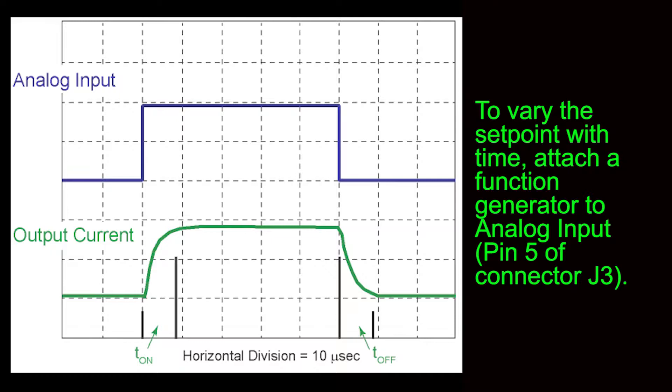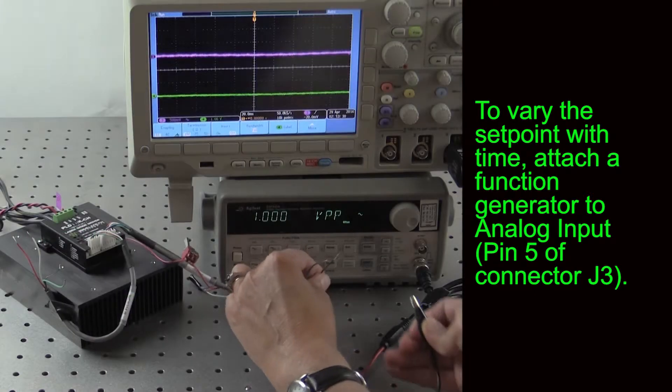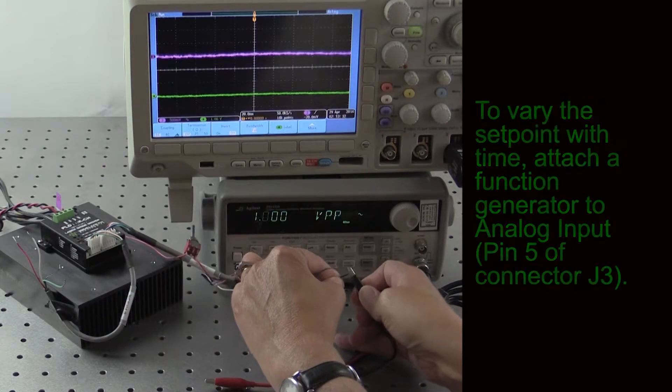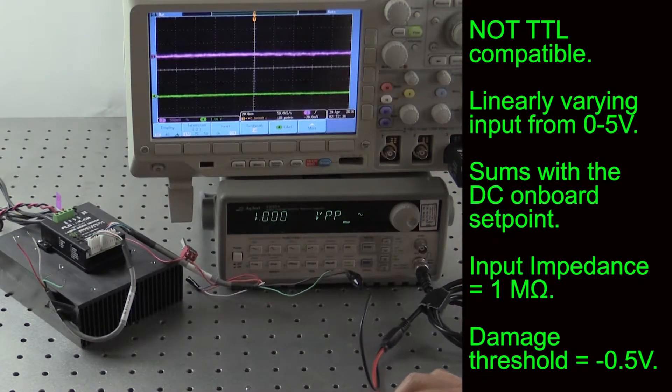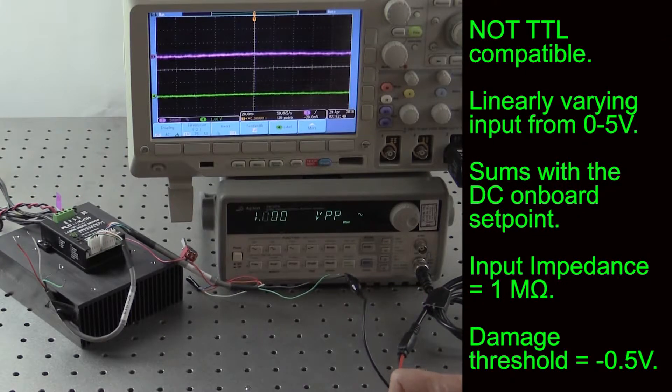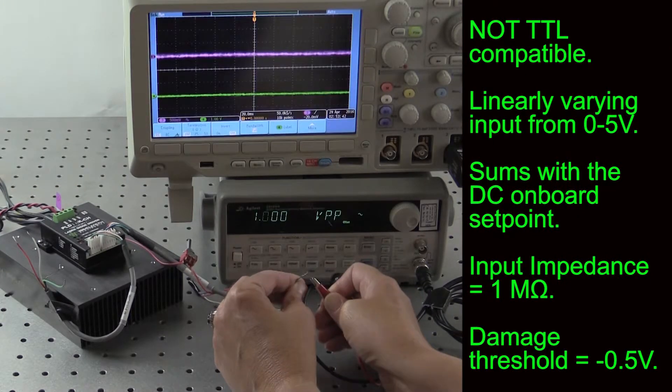To vary the setpoint with time, you can attach a function generator or a computer-controlled data line to the modulation input, analog in. This is pin 5 of connector J3. This input is not TTL compatible. It expects a signal from 0 to 5 volts and sums with the DC setpoint of the on-board output current trim pot.